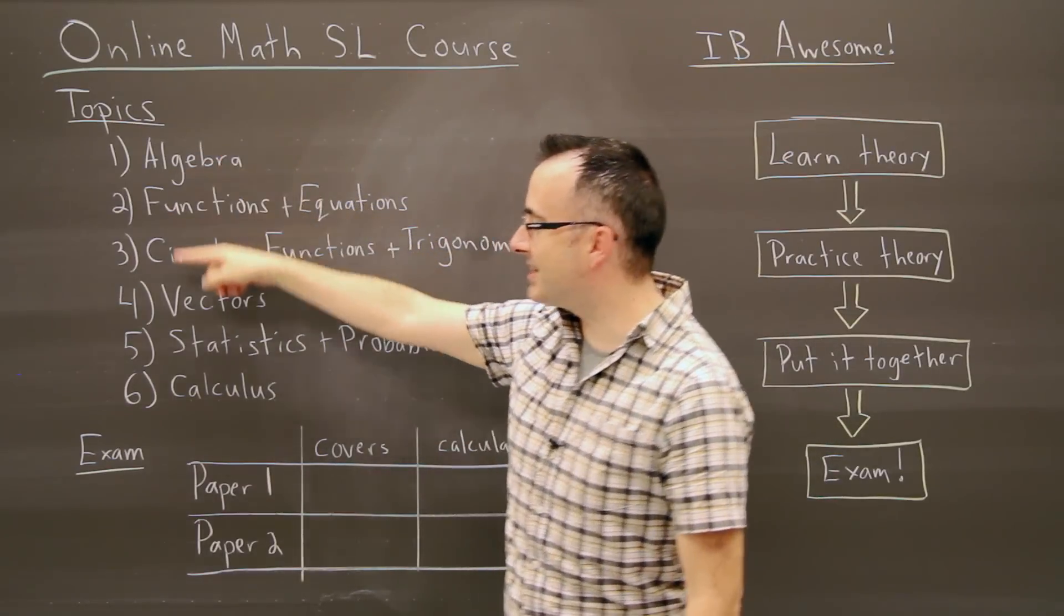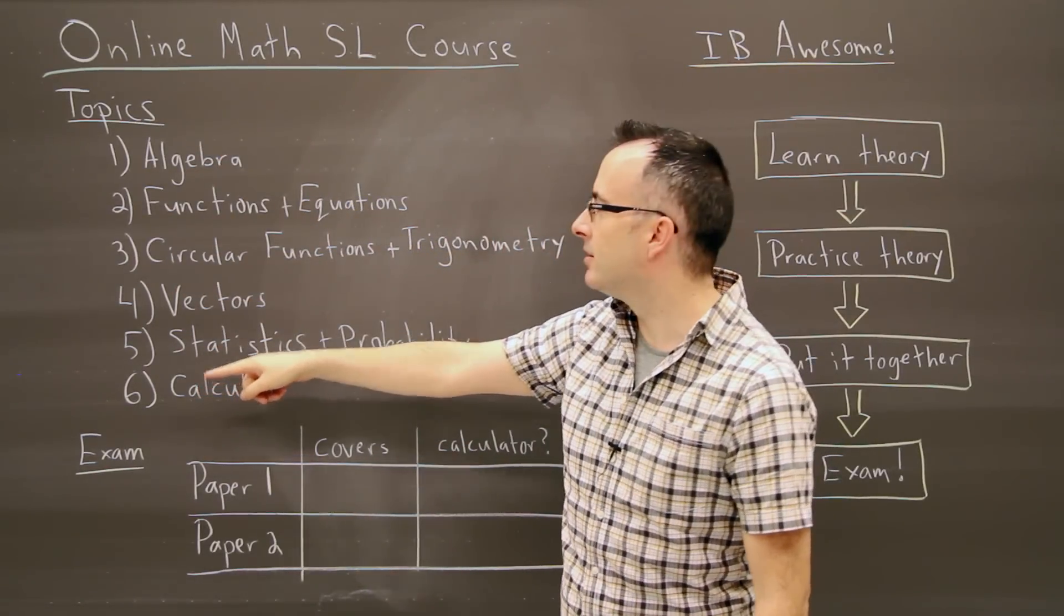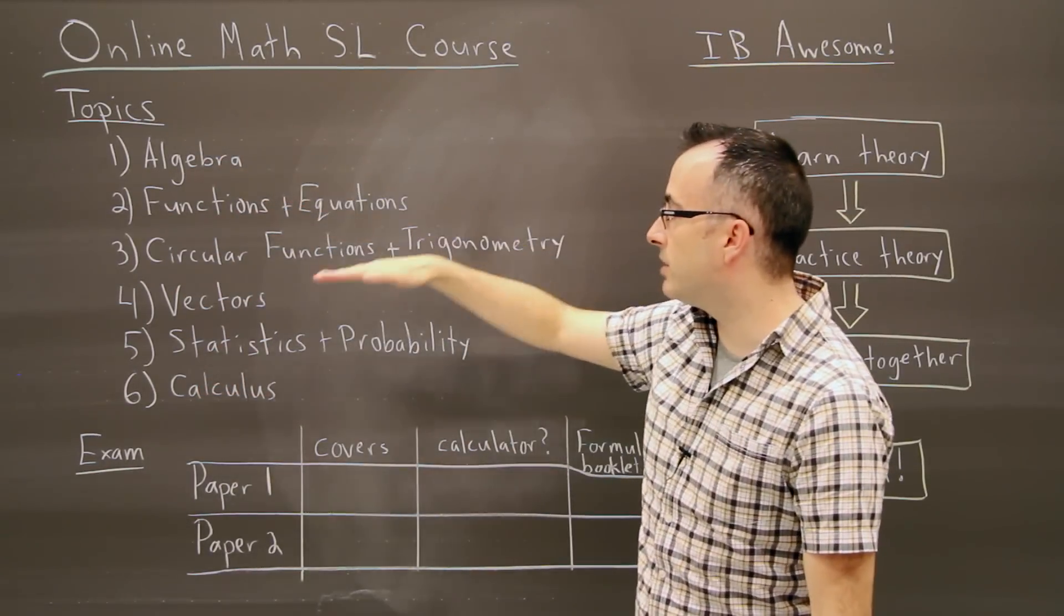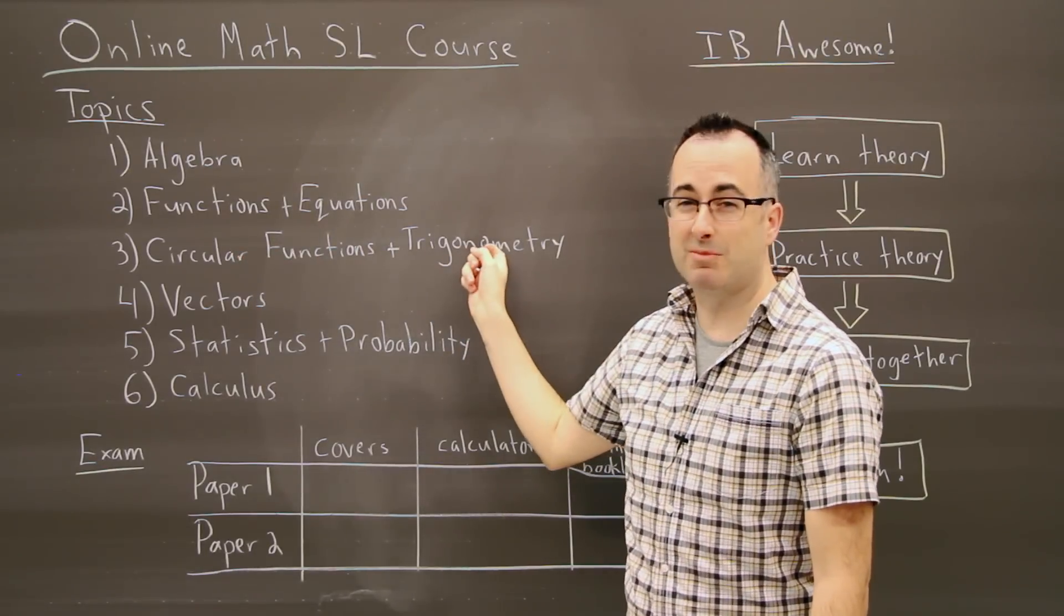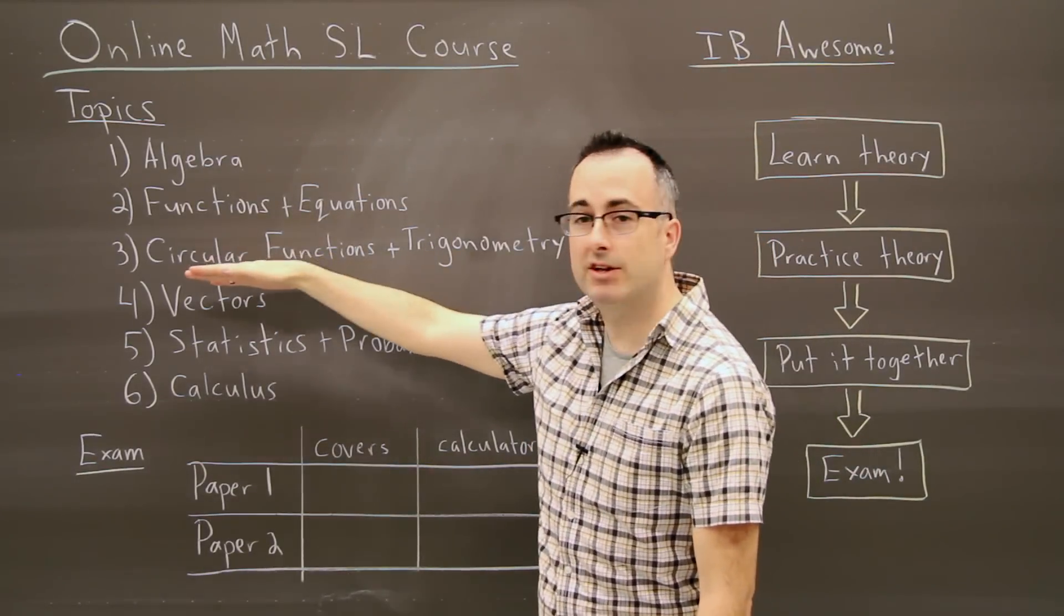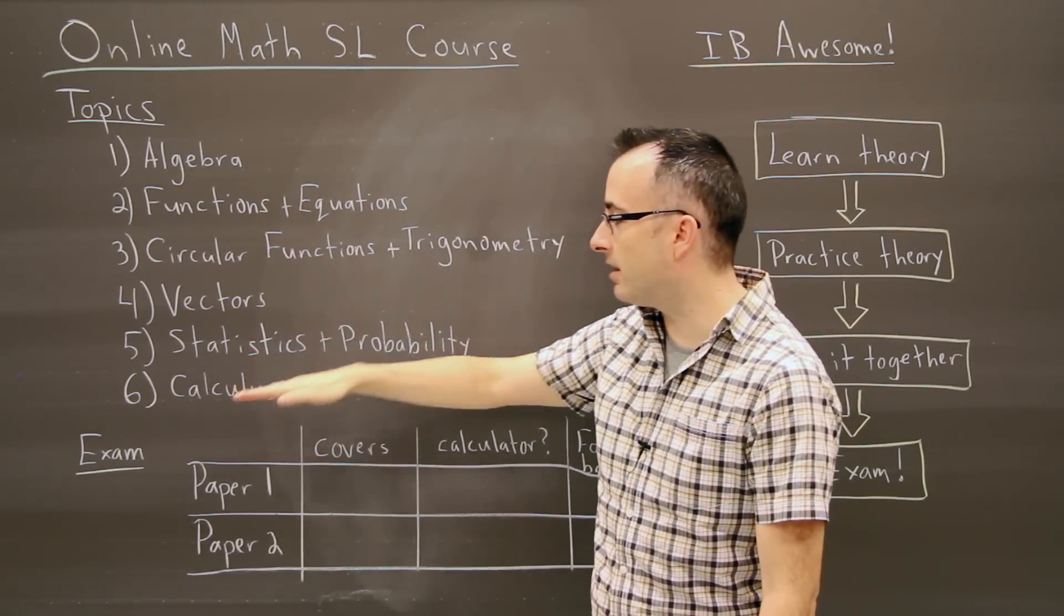So I hope you know that there are six different topics you're supposed to learn about. There's algebra, functions and equations, circular functions, although it's mostly called trigonometry, vectors, statistics and probability, and finally calculus.